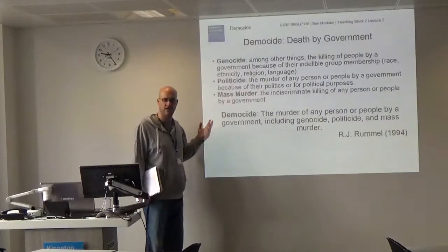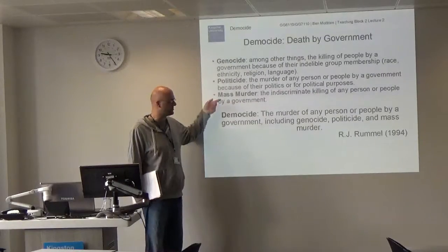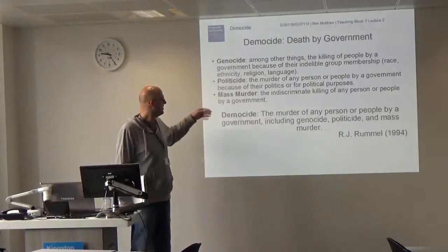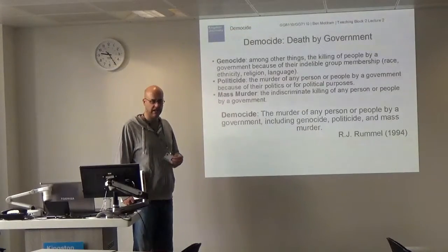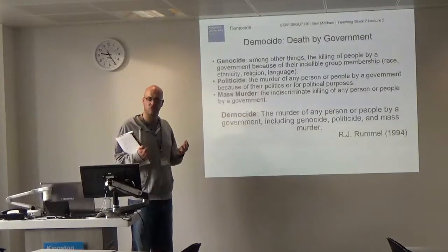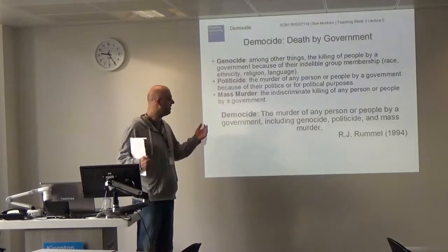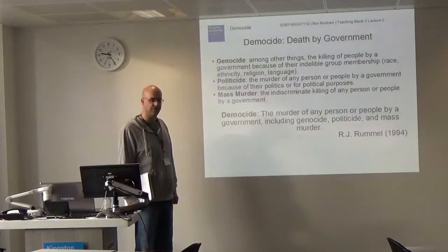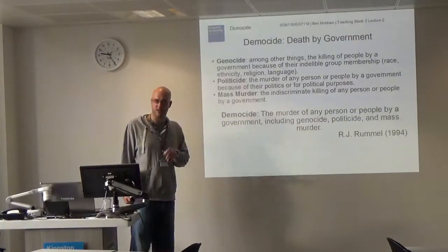Mass murder is kind of like the nuclear option for governments — it's usually undertaken when they face a crisis and it's the easiest option. Think of Tiananmen Square: you've got a whole bunch of students refusing to stand down, and the Chinese government sees the problem coming to a head. If those protests spread across the country, it could go like wildfire. So they decide the quickest and easiest option is to just force those people out, and if people die in the process, then so be it.